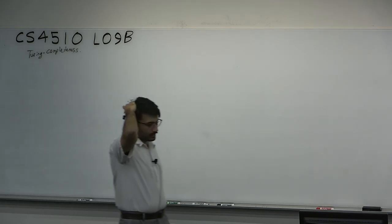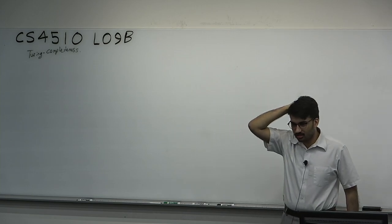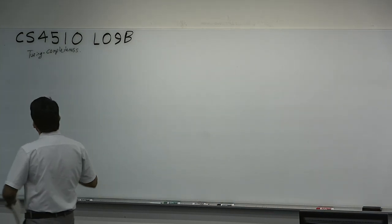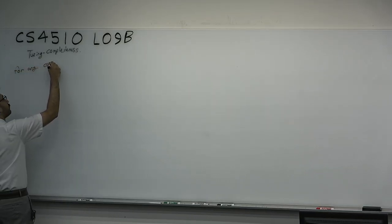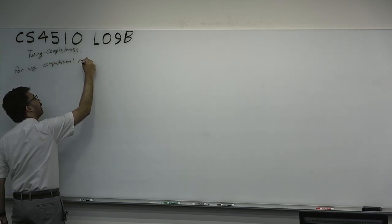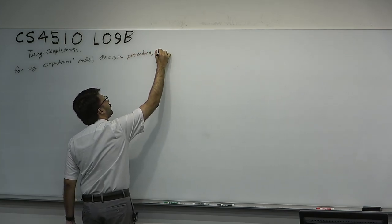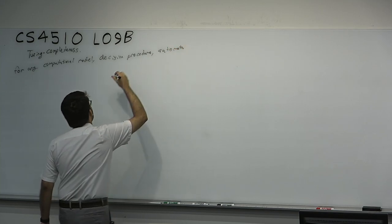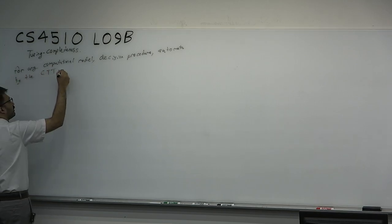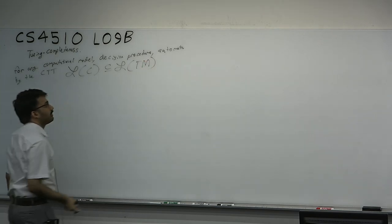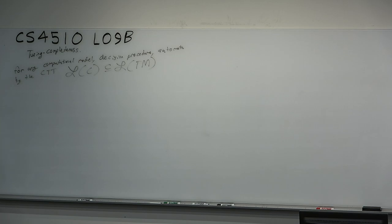We'll talk about what that means. First, let's formalize exactly. Now that we've given simulation evidence in favor of the Church-Turing thesis, let me give you the statement of the Church-Turing thesis in a way that you are allowed to apply it. There are two things you can do. For any computational model, decision procedure, or automata, you can just say by the Church-Turing thesis that that class is a subset of the recognizable languages.